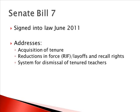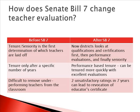Senate Bill 7 was signed into law in June of 2011. It is a part of PARA and addresses the acquisition of tenure, reductions in force or RIFs, layoffs, and recall rights, and the system for dismissal of tenured teachers. Senate Bill 7 has changed teacher evaluation in a couple of ways. Before Senate Bill 7, tenure or seniority was the first thing that districts looked at in determining which teachers would be laid off or RIFed.